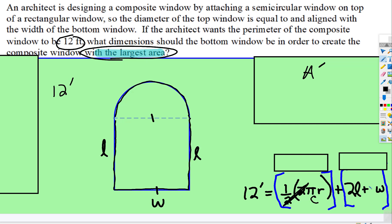And then normally for perimeter of a rectangle it's twice length plus twice width but there's only one width so that cancels.